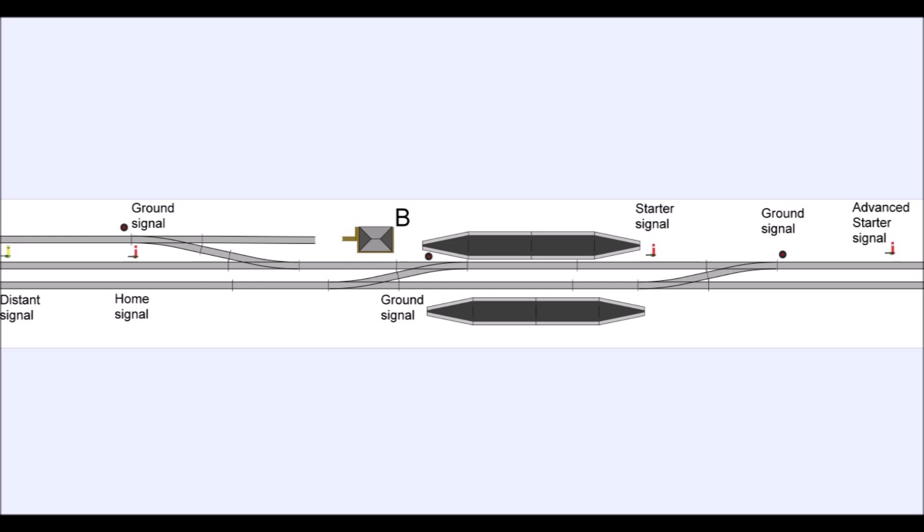So what B now gains is an advanced starter, that is the outer end of his station limits is extended, allowing the train engine to run forward past the crossover and then shunt back over the crossover to get back onto the back of the train in order to shunt.